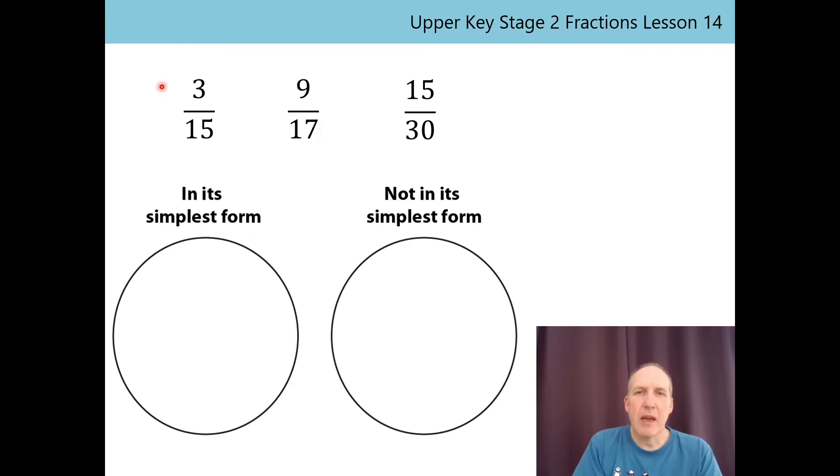Straight away I'm thinking 3/15 is not in its simplest form. Can you think why? That's right, I've spotted that 3, the numerator, is a factor of 15, the denominator. So if I divide them both by 3, I'll get a unit fraction. Remember, we can't simplify unit fractions any further.